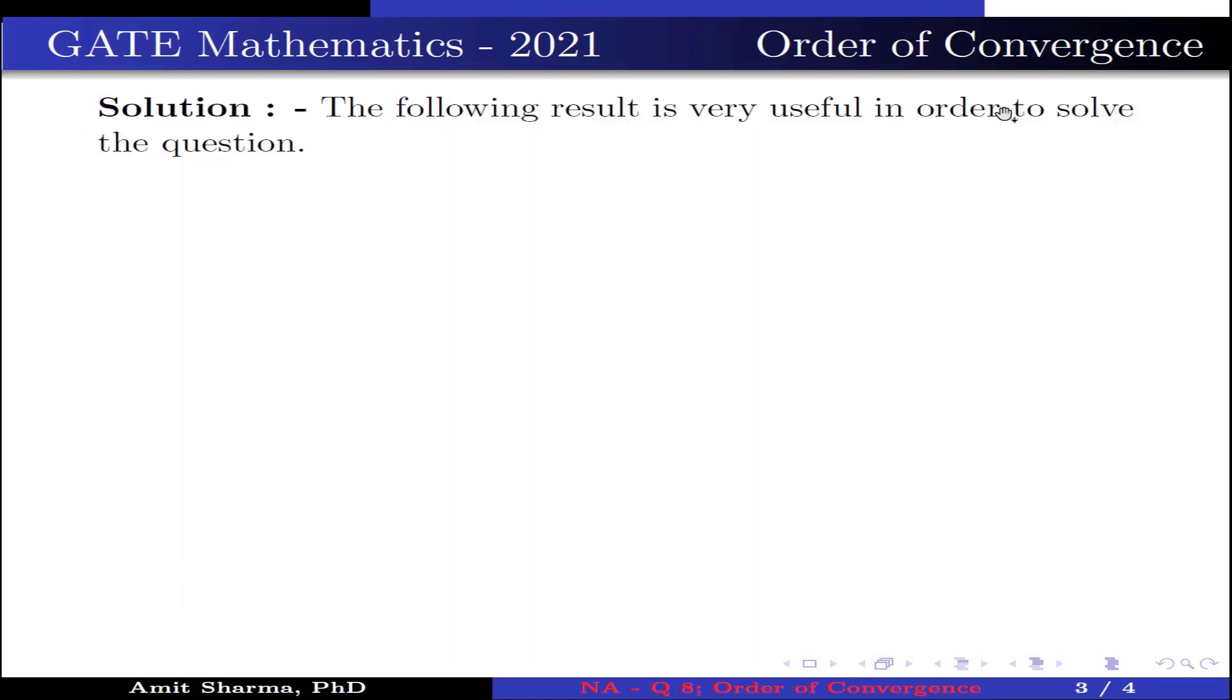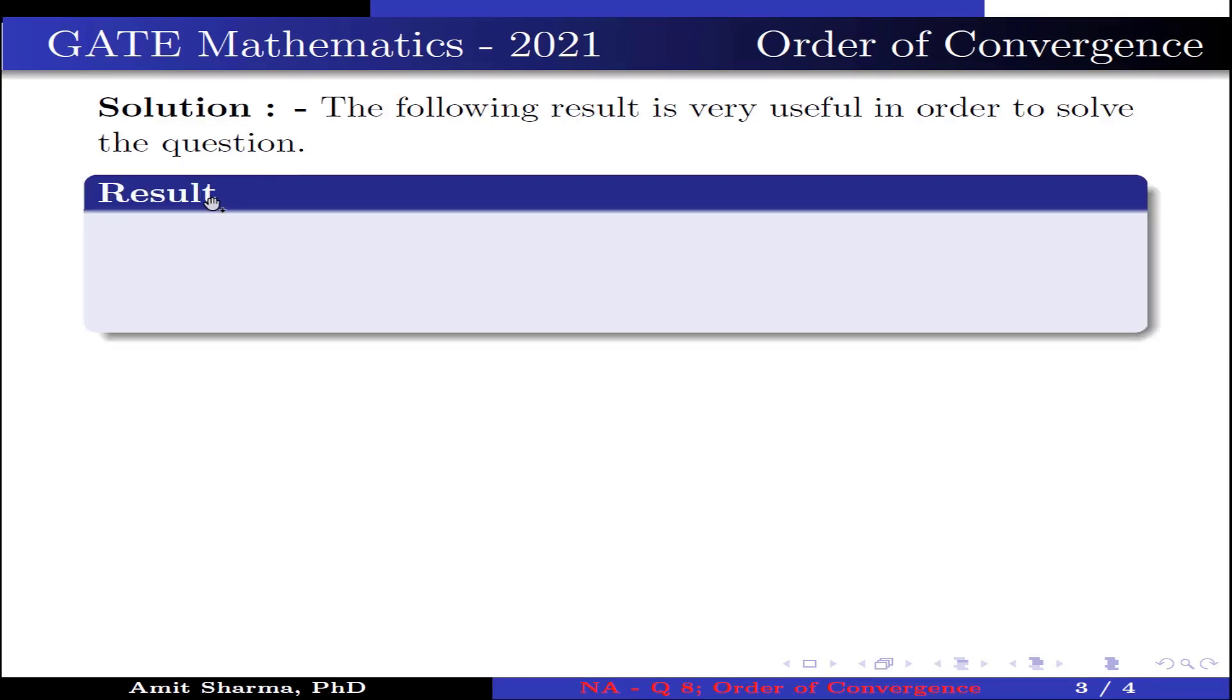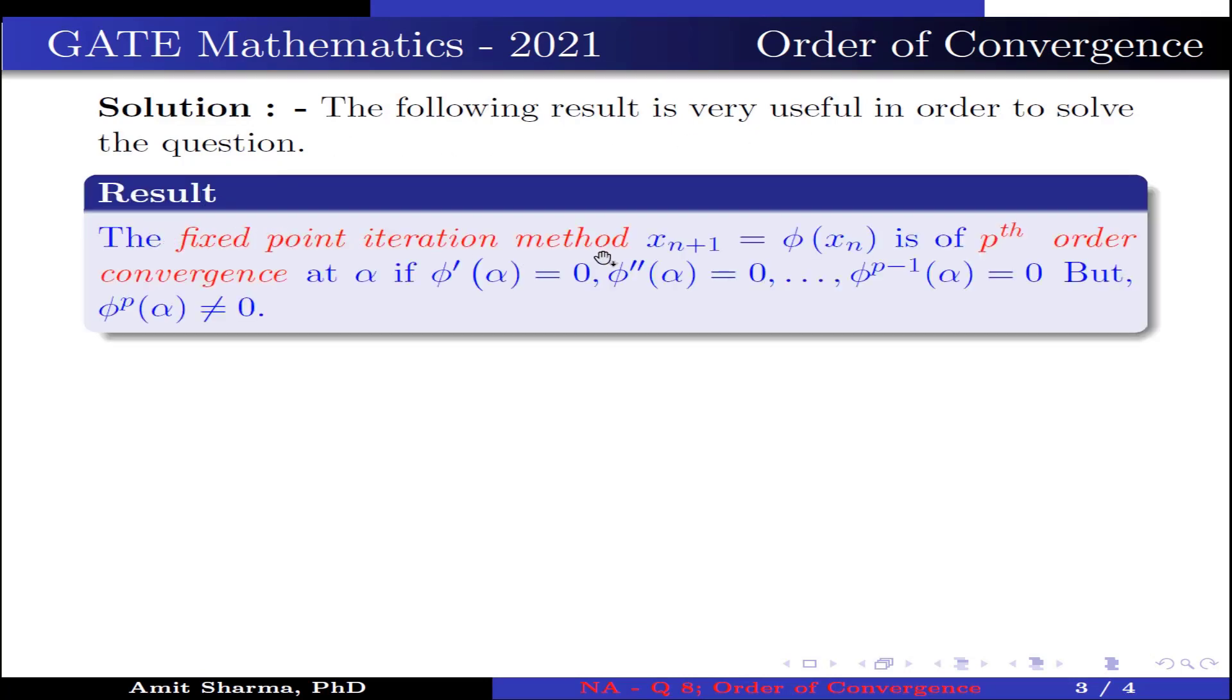The following result is very useful to solve the question. Result: The fixed point iteration method x_{n+1} = φ(x_n) is of p-th order convergence at α if φ'(α) = 0, φ''(α) = 0, up to φ^(p-1)(α) = 0, but φ^(p)(α) ≠ 0.